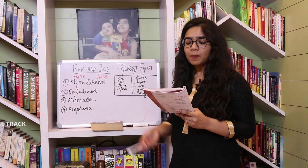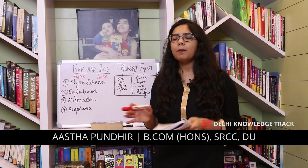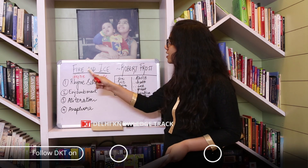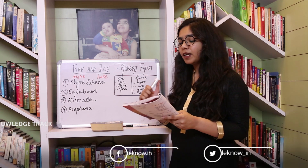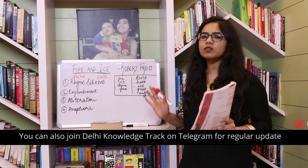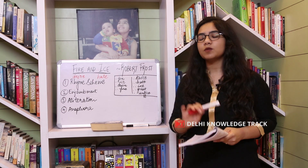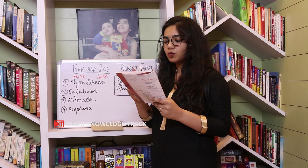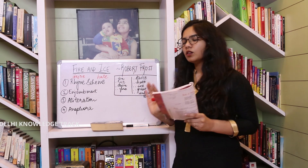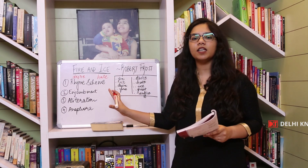Moving on: 'But if it had to perish twice, I think I know enough of hate to say that for destruction, ice is also great and would suffice.' If the world were to be destroyed twice — the first time because of desire — then for a second destruction, the author says he knows enough about hatred to say ice would also suffice. Hatred is also a very powerful thing, sufficient to cause the end of the world. 'Perish' means to die or be destroyed, and 'suffice' means to be sufficient — hatred would be enough to destroy the world.